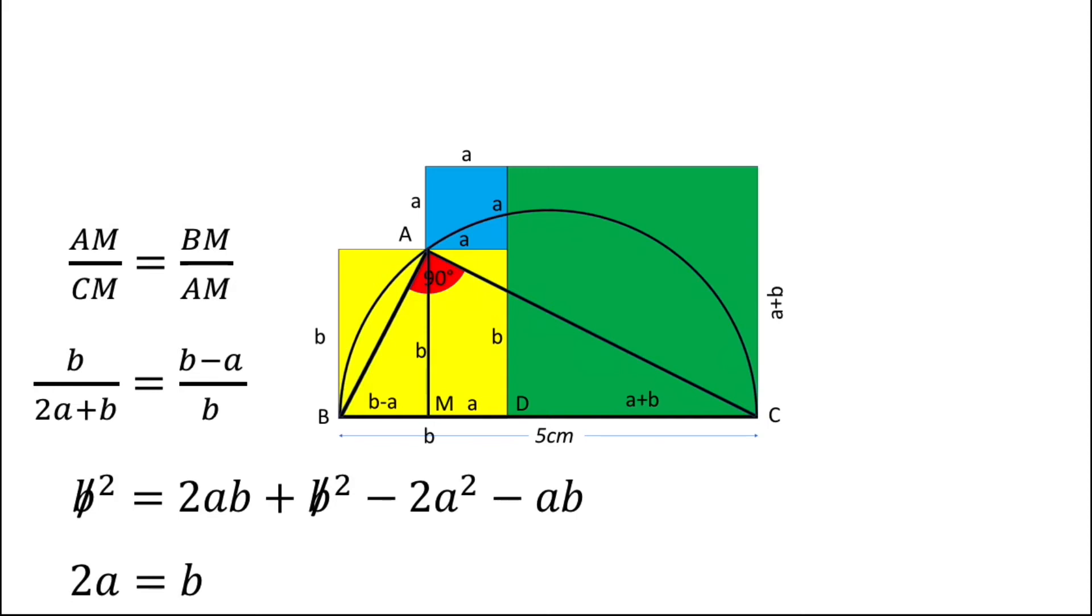So now let's use this information. BC is 5 cm given, so BC will be BD plus CD. BD is small b, CD is a plus b, so we can write b plus a plus b should be equal to 5. Now put b equals to 2a here.